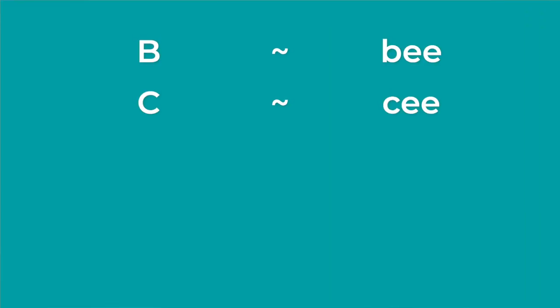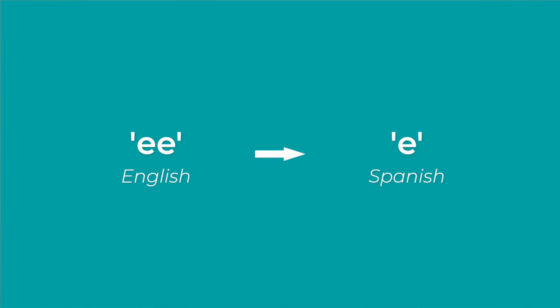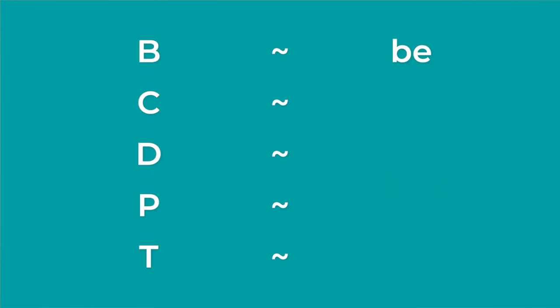B, C, D, P, T. In order to derive these Spanish letters, all we have to do is replace the E sound of English with the E sound of Spanish. This leaves us with B, C, D, P, T.